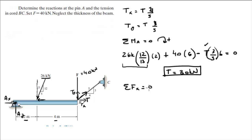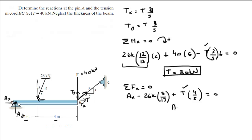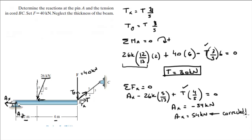Now, sum of the forces in X equals 0. In the X direction we have AX minus the X component of the 26 kN force, which is 26k times 5/13 going towards the left (negative), plus the tension times 4/5 in X, all equal to 0. Plugging in T = 80 kN and solving for AX gives negative 54 kN — meaning AX is actually 54 kN going towards the left, so we correct it on the diagram.